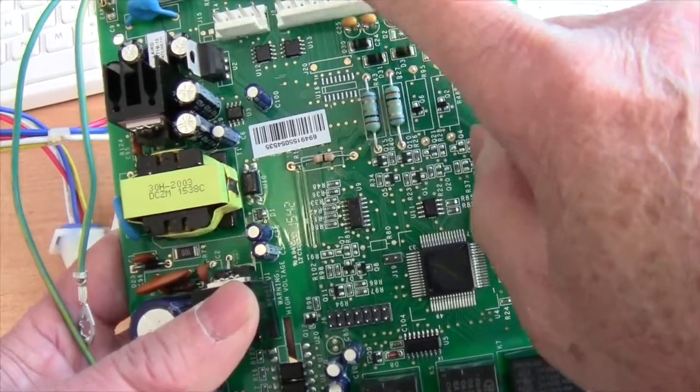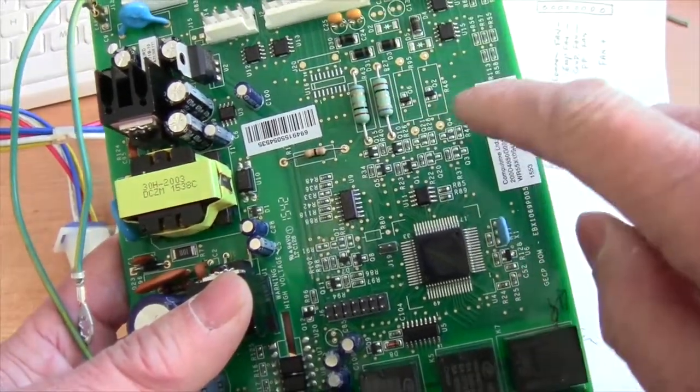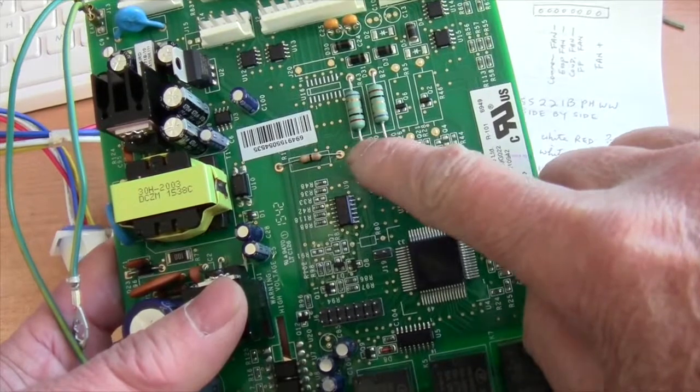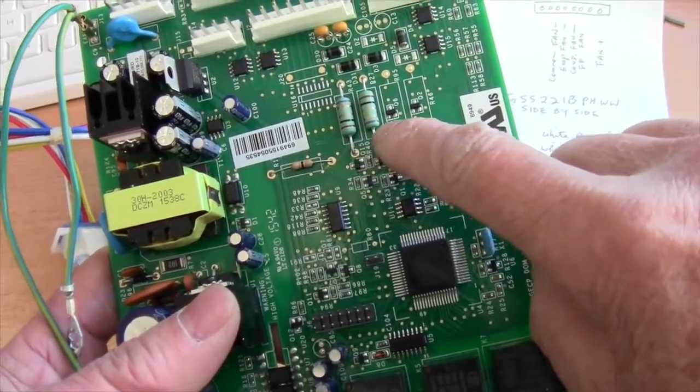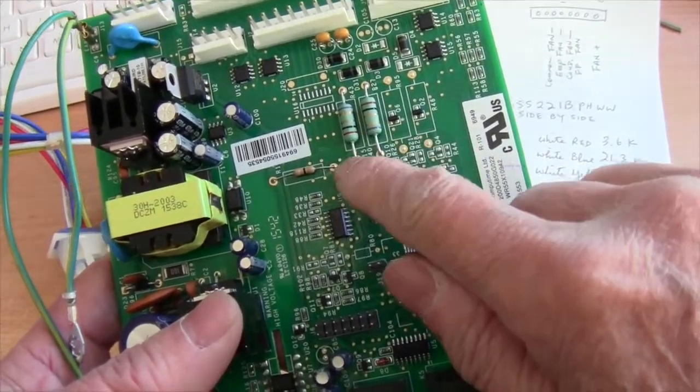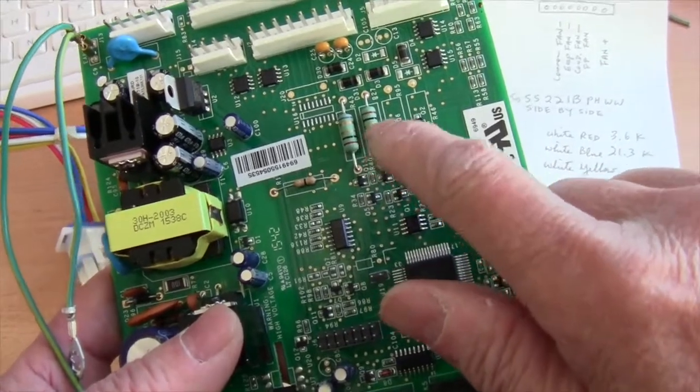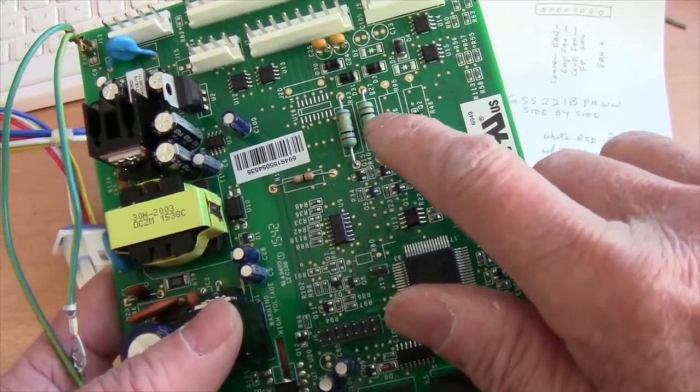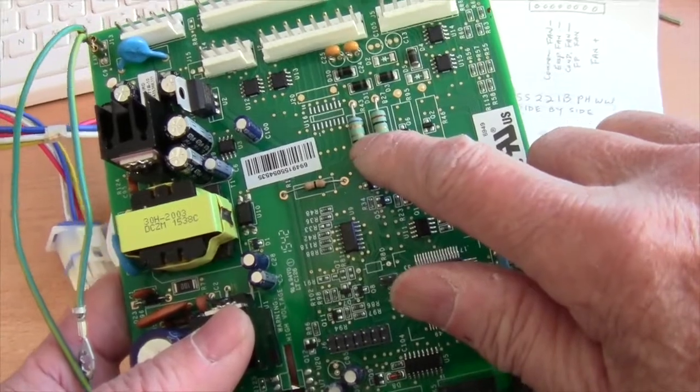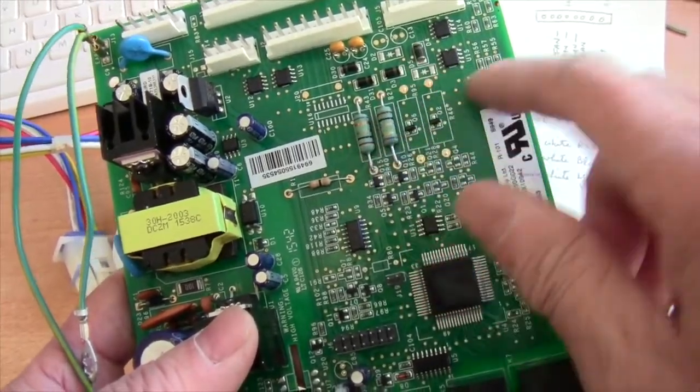This is the power supply for the evaporator fan. And these two 2 ohm resistors here, if you see that they're burned, then chances are your fan motor is gone. It's probably shorted out and burned up your power supply.